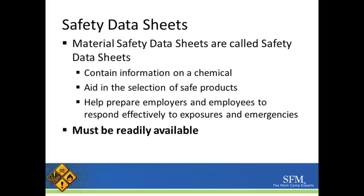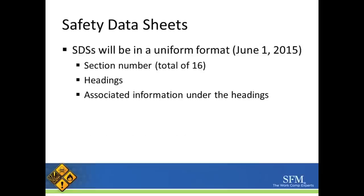Material safety data sheets are now going to be called safety data sheets. They will contain information on a chemical, aid in the selection of safe products, and help prepare employers and employees to respond effectively to exposures and emergencies. As they were before, they must be readily available. Safety data sheets must be in a uniform format by June 1st of 2015. They must have identified section numbers — a total of 16 — specific headings, and associated information under each heading.